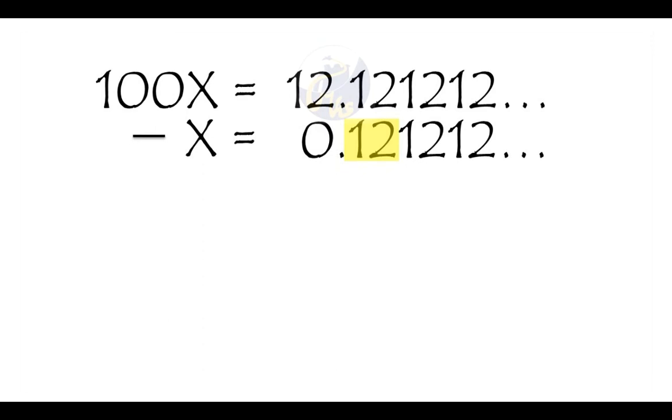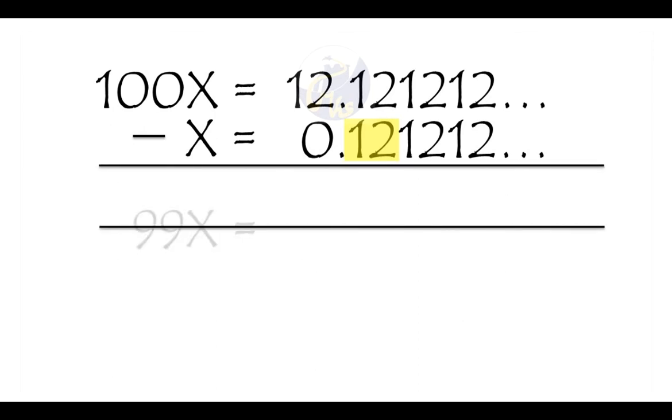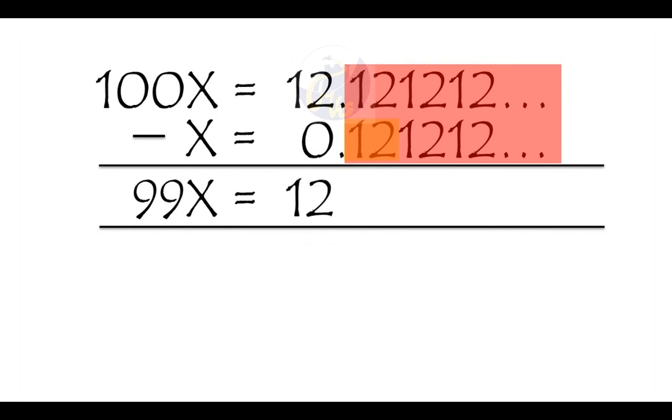What we're going to do now is subtract the X from the 100X, which leaves us with a small equation to solve. The X from the 100X leaves 99X. On the other side, because the ones and the twos all line up, this whole block is going to disappear - the twos and ones all cancel out when we subtract, leaving us with 12. So we get 99X equals 12. This can then turn into its fraction by dividing both sides by 99, giving us the fraction 12/99, which simplifies down to 4/33.